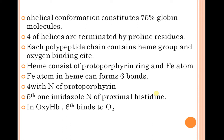Each polypeptide chain contains a heme group and an oxygen-binding site. Heme consists of a protoporphyrin ring with an iron atom. Iron has six bonds: four with nitrogen atoms of the protoporphyrin, the fifth with the imidazole group of the proximal histidine. In oxyhemoglobin, the sixth bond binds with oxygen.